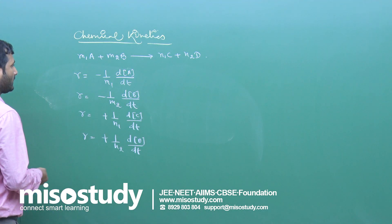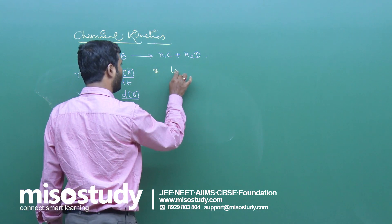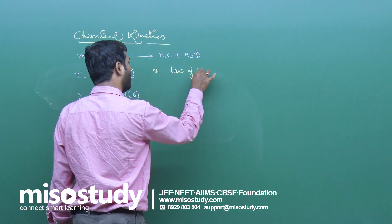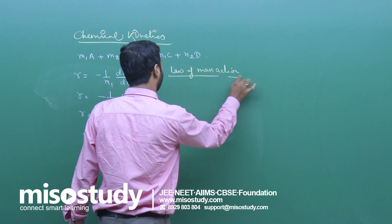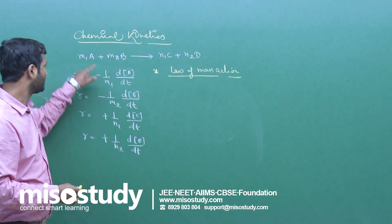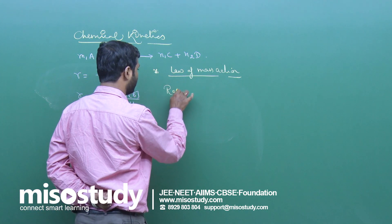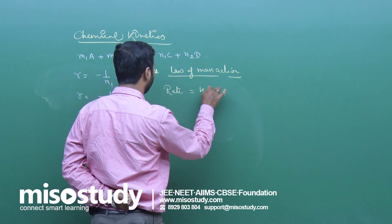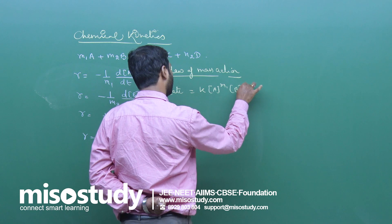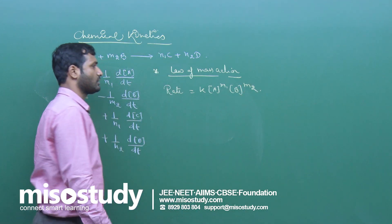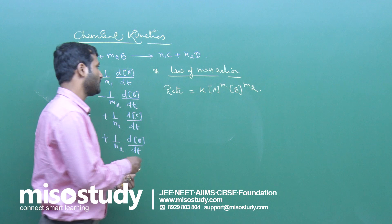The next point is the law of mass action. According to this law, for a reaction, rate = k[A]^m₁ × [B]^m₂ — that is, the rate depends on the concentration of the reactants raised to their stoichiometric coefficients.